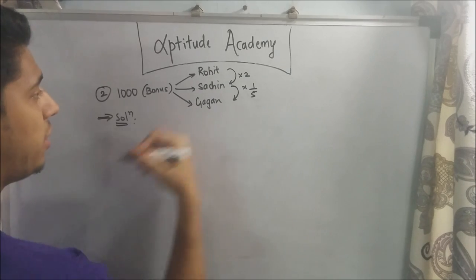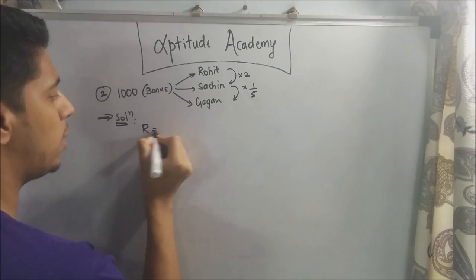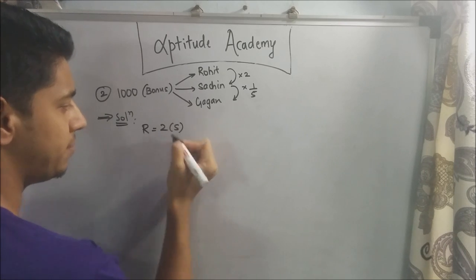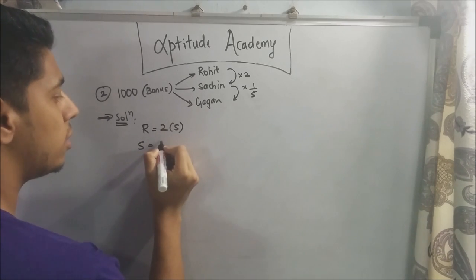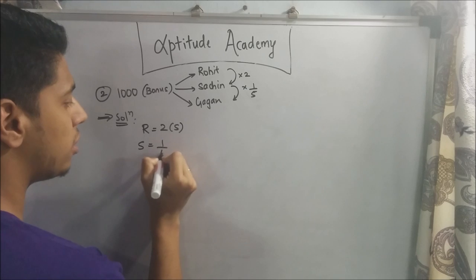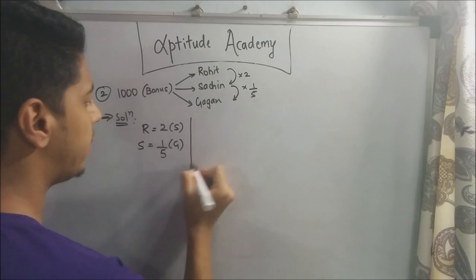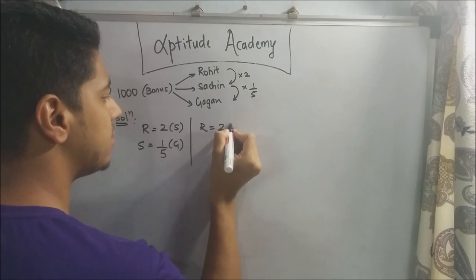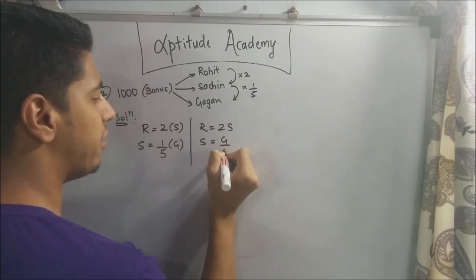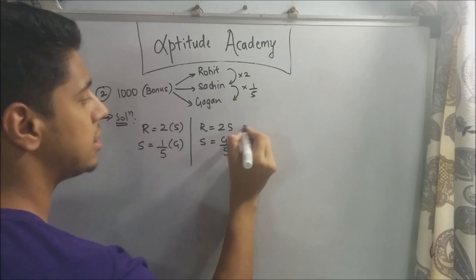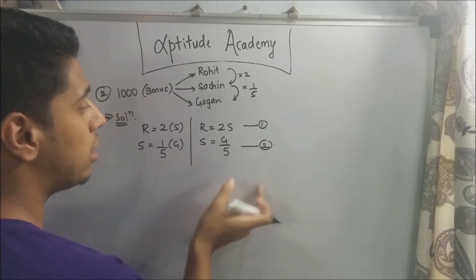We'll assign r to Rohit, s to Sachin, and g to Gagan. Rewriting the equations: Rohit equals twice as much as Sachin — r = 2s (equation one) — and Sachin equals one-fifth of Gagan — s = g/5 (equation two).